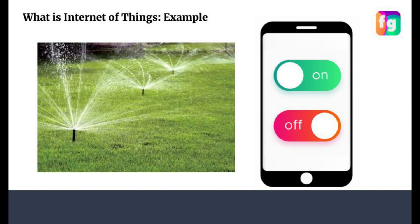There are several advantages here. First, our time is saved and we can manage the sprinklers efficiently. Second, we can add remote control for our sprinklers. Third, we have humidity and temperature data, and according to that data we can perform actuation in any remote location. We have integrated an on and off feature using a temperature sensor and humidity sensor.